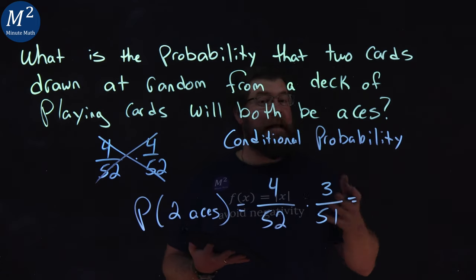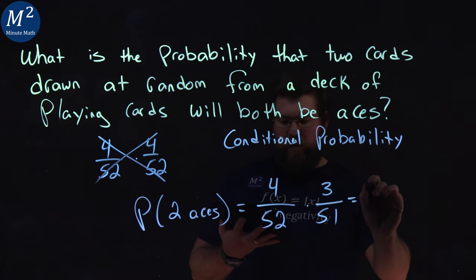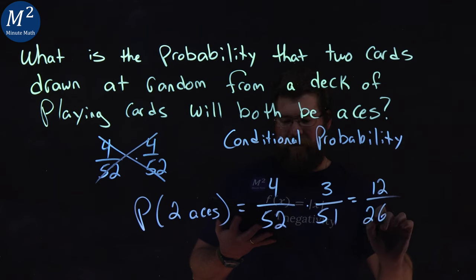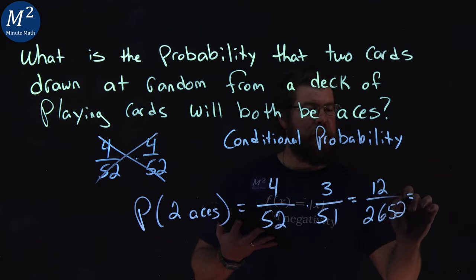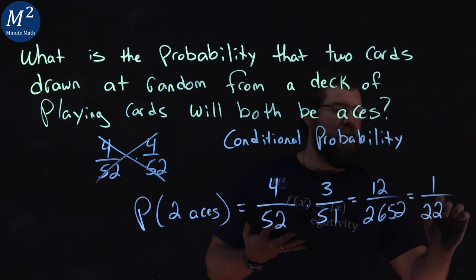Now, we can multiply this out to get our probability. And four times three is 12, out of 52 times 51 is 2,652. And it's a fraction that simplifies to 1 over 221.